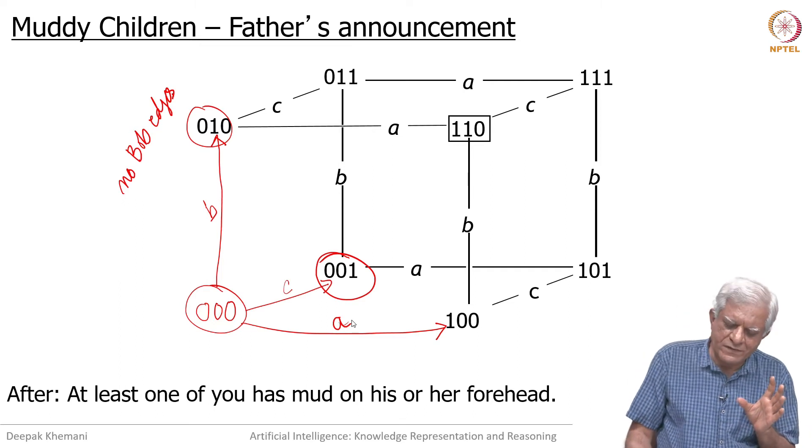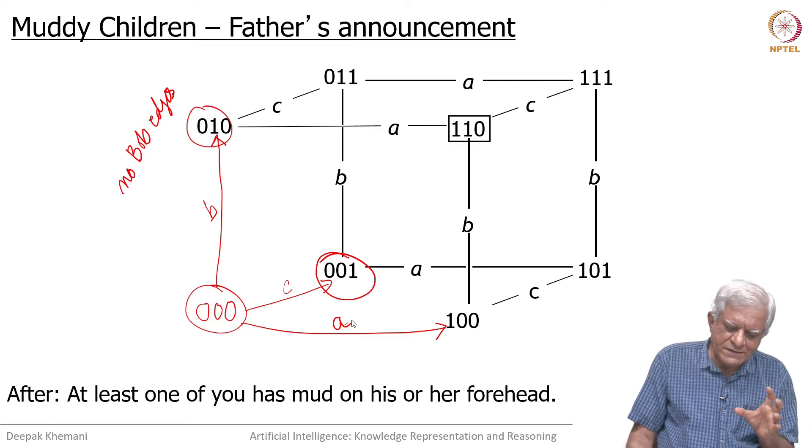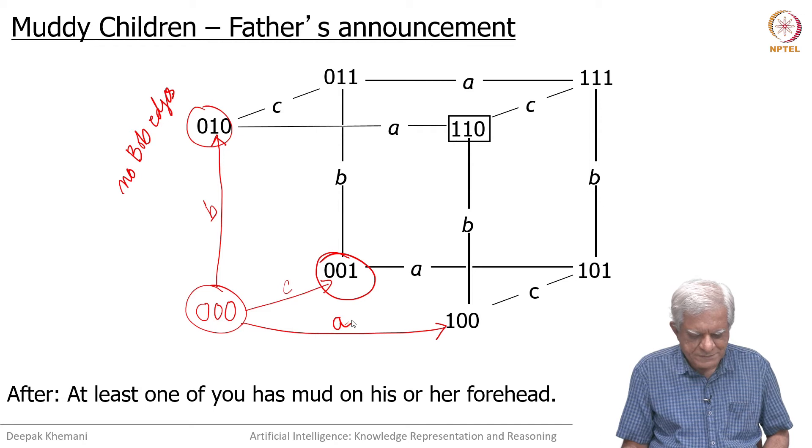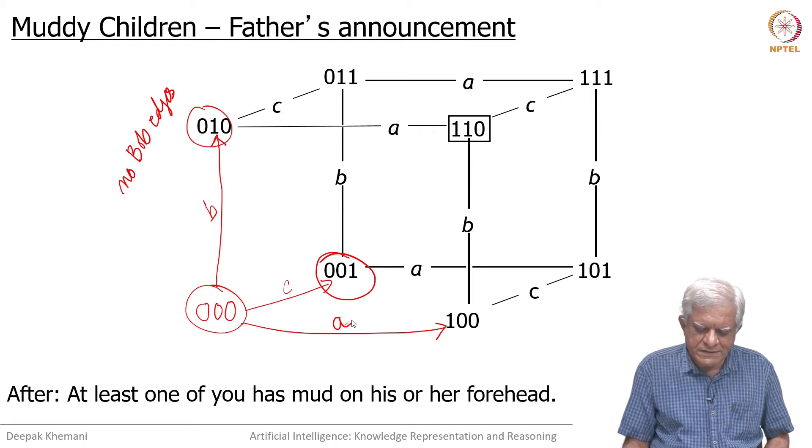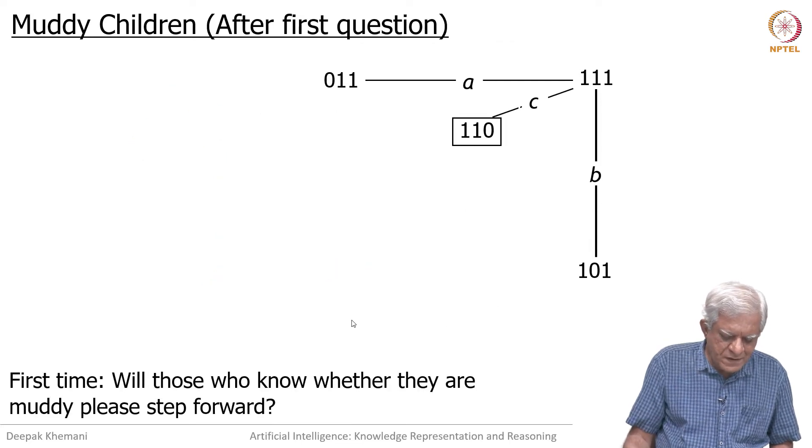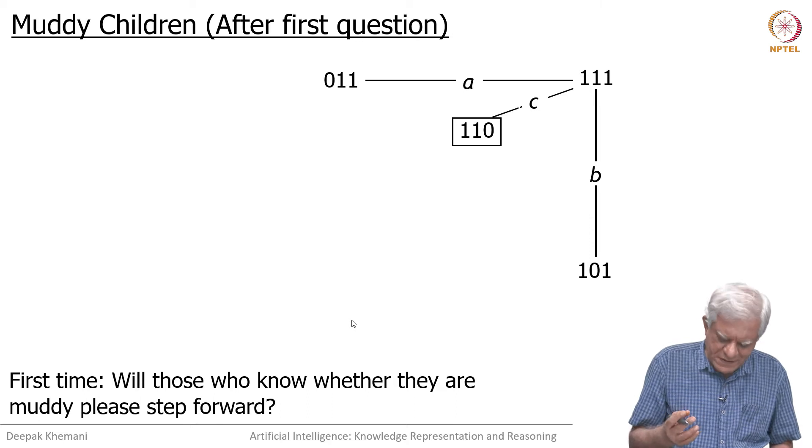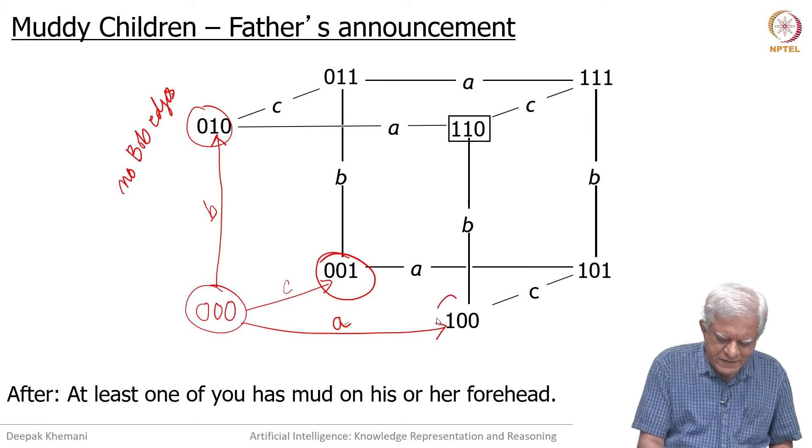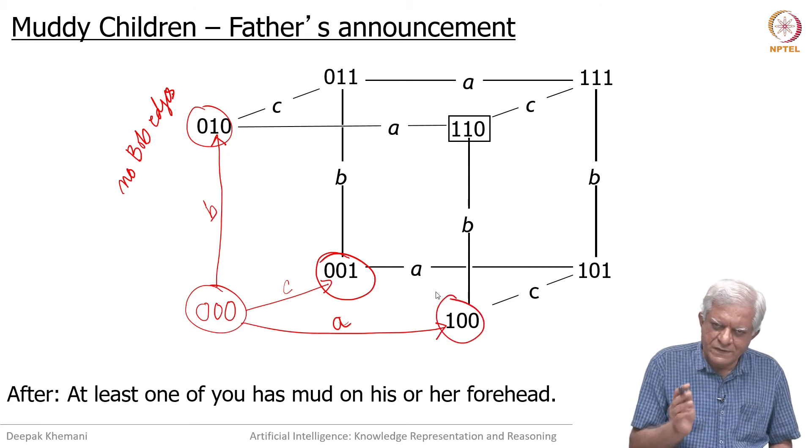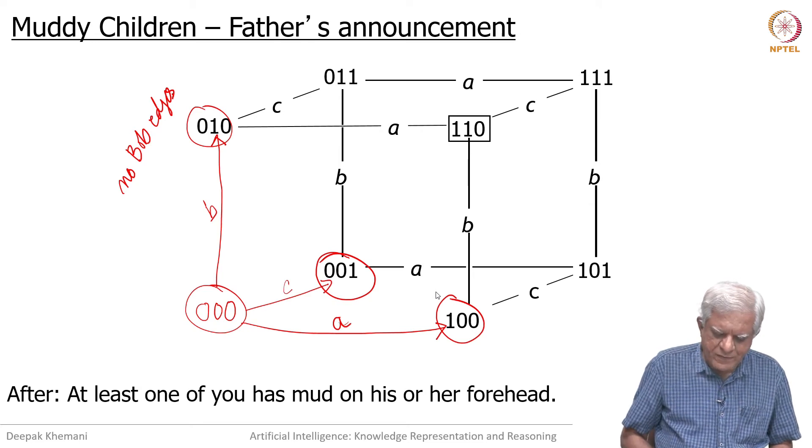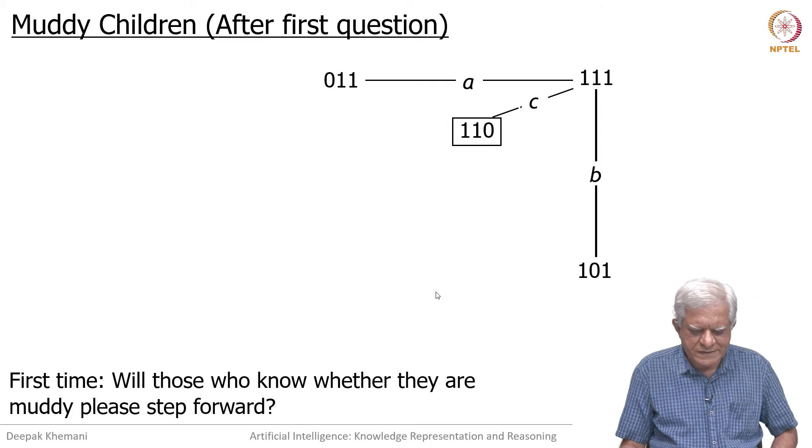If Bob was the only one with a muddy head, then Bob would know at this stage. Likewise for Kathy - if she was the only one to have a muddy forehead, she would know at this stage because there are no Kathy edges going from that edge. These are the edges which got deleted alongside the announcement, and likewise for Ann. When the father asked does anyone know and nobody steps forward, then all those three states that I had circled here, all of them will vanish.